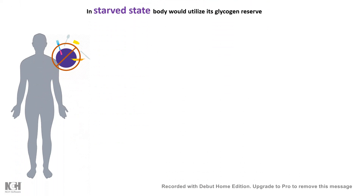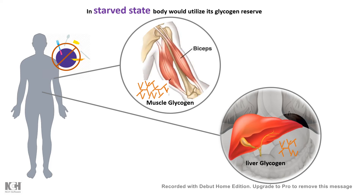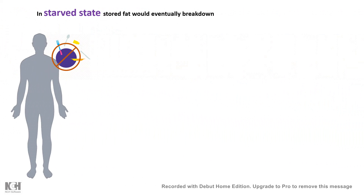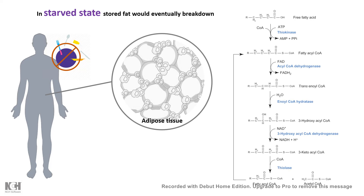So in the starved state, the body would start to look for alternatives. First of all, it would use its own reserves — its glycogen reserve which is present in the muscles and in the liver. Now once the glycogen reserve is over, it would start to use amino acids and fatty acids, whatever it can get to make glucose and utilize that. When that is even finished, it would start breaking down fatty acids. From the adipose tissue, it would start oxidizing the fat and as a result, a huge amount of acetyl-CoA would be produced.